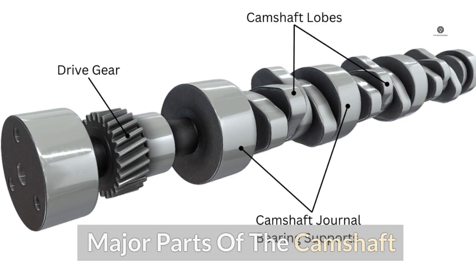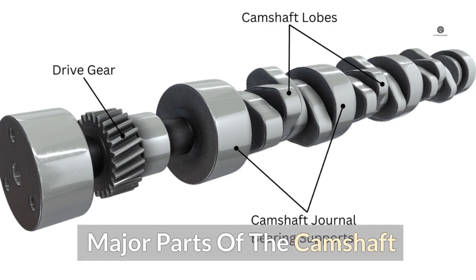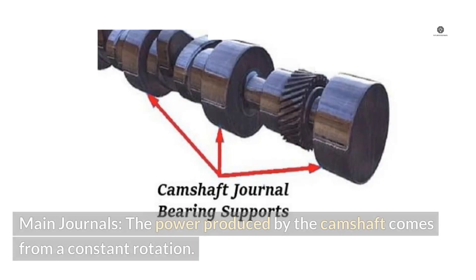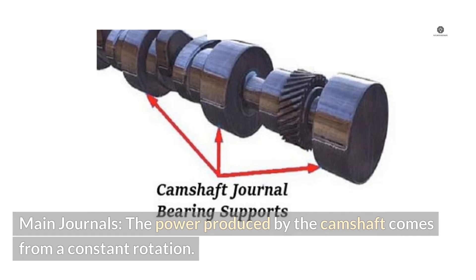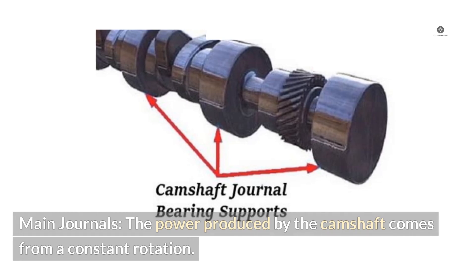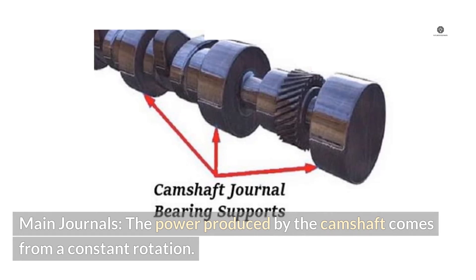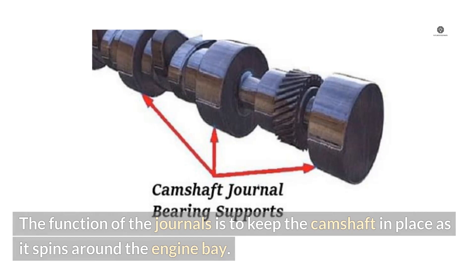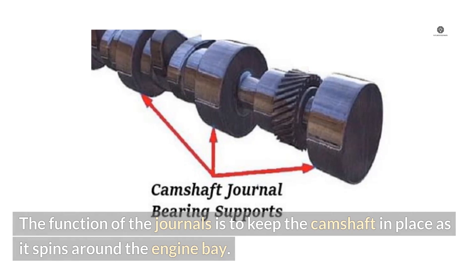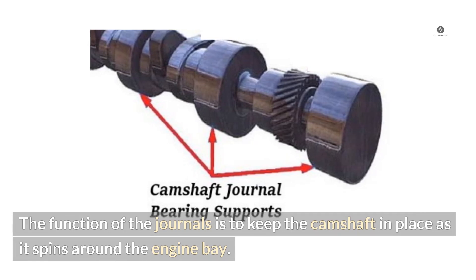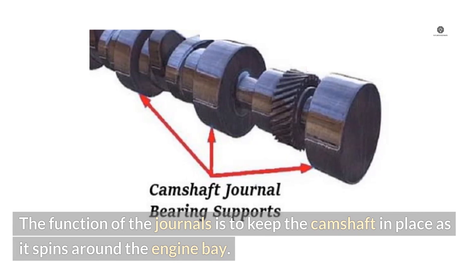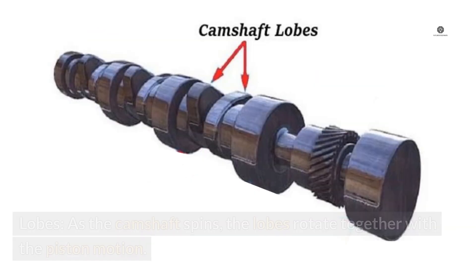Major parts of the camshaft — Main journals. The power produced by the camshaft comes from a constant rotation. The function of the journals is to keep the camshaft in place as it spins around the engine bay.